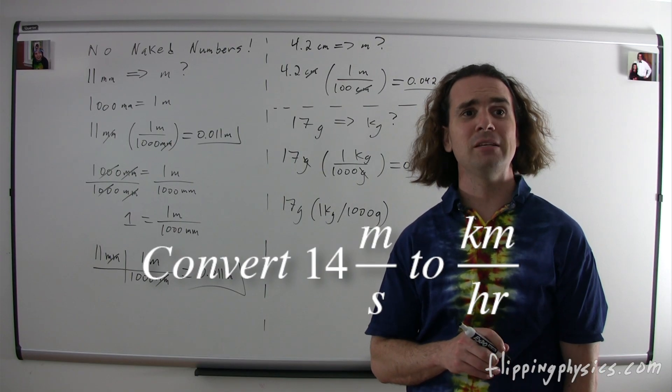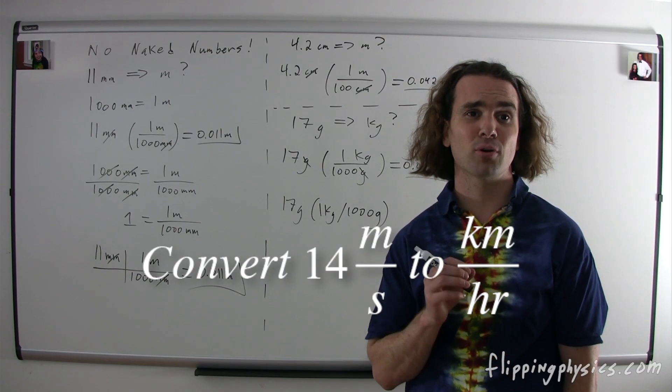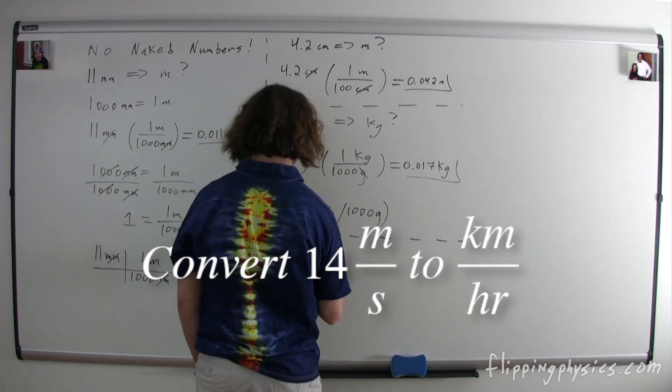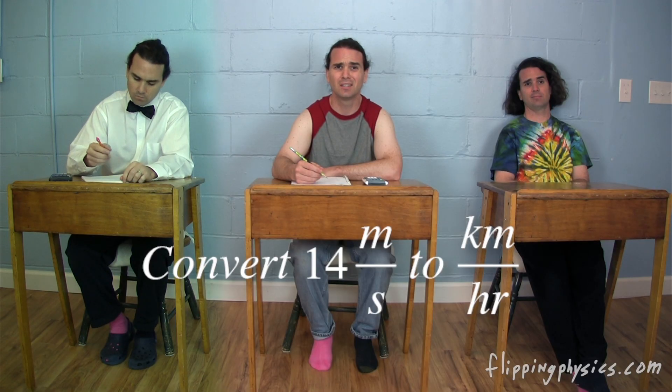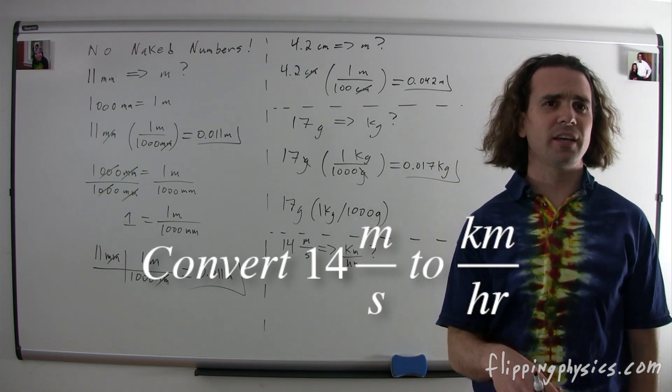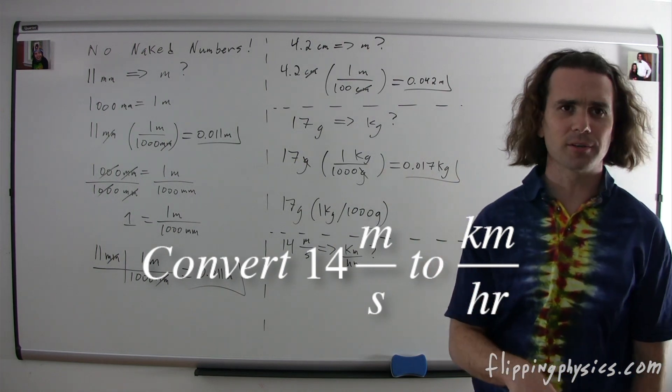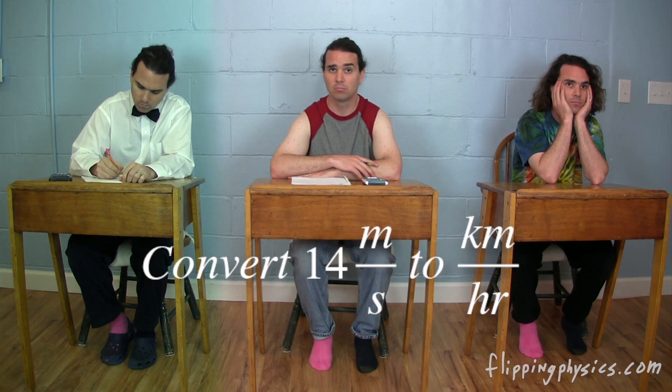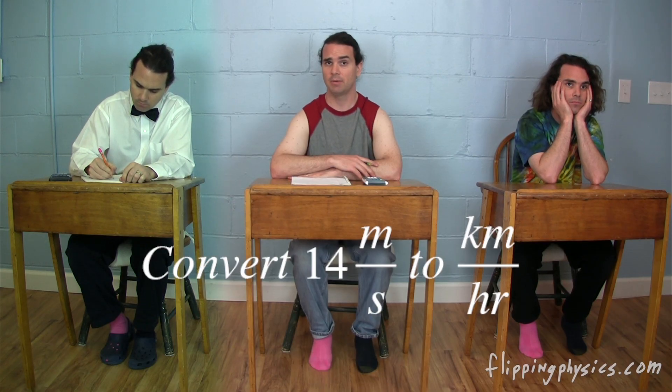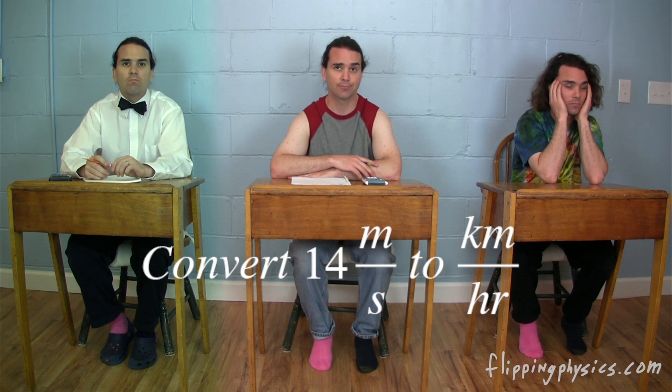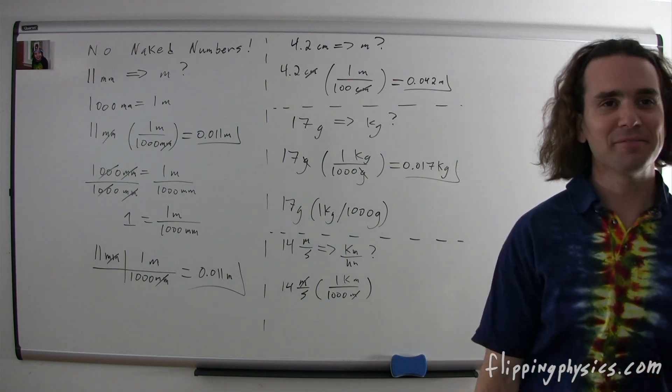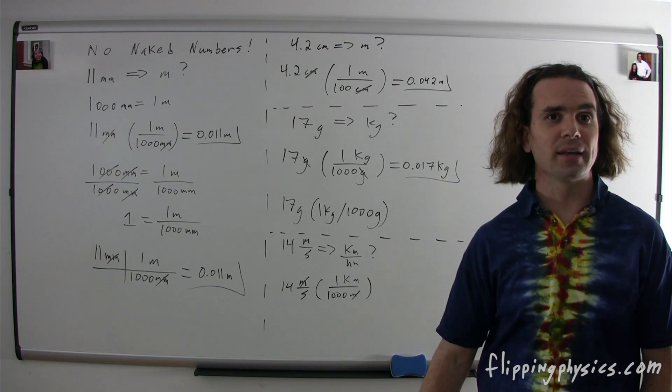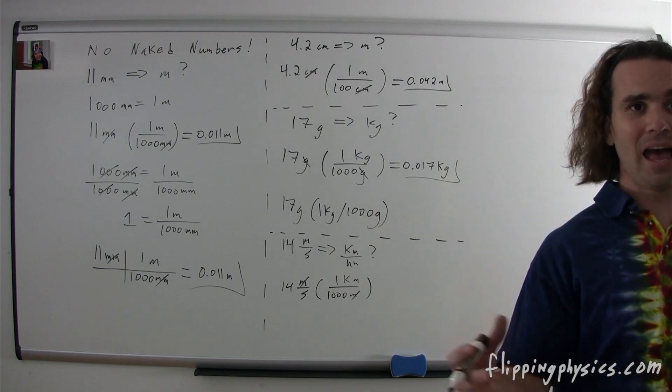Bobby, could you please convert 14 meters per second to kilometers per hour? Uh, what? Just one piece at a time, Bobby. Start with meters to kilometers, then we can deal with the seconds to hours. Okay. If we multiply by 1 kilometer over 1,000 meters, that will cancel out the meters. Bo, what dimensions are we left with then? We are left with kilometers per second. Right, kilometers per second. So then we need to convert the seconds to hours.